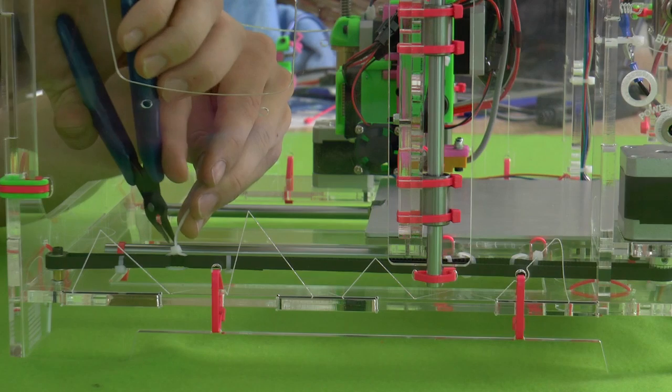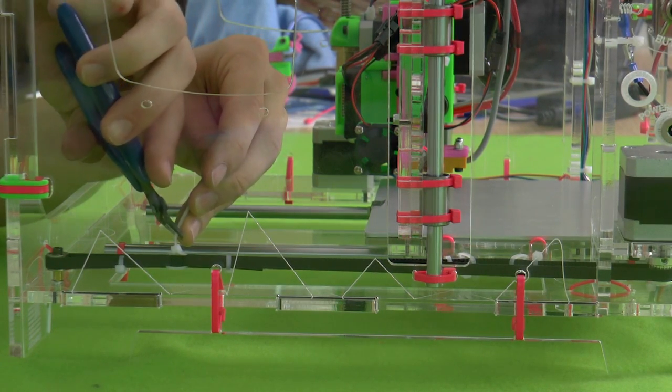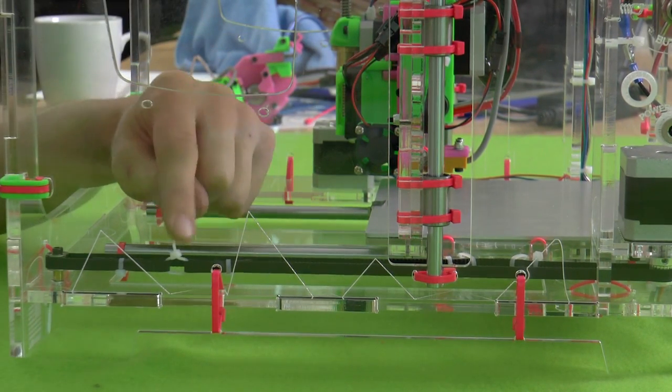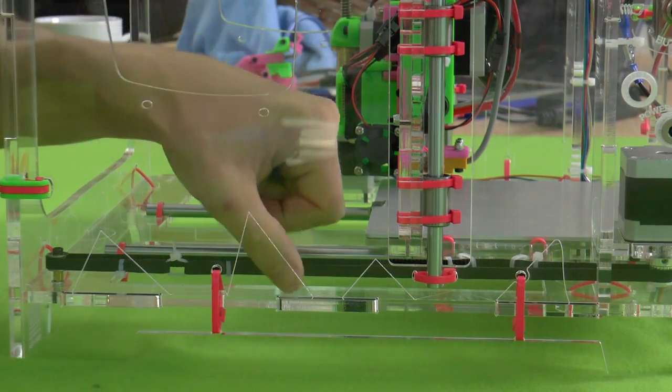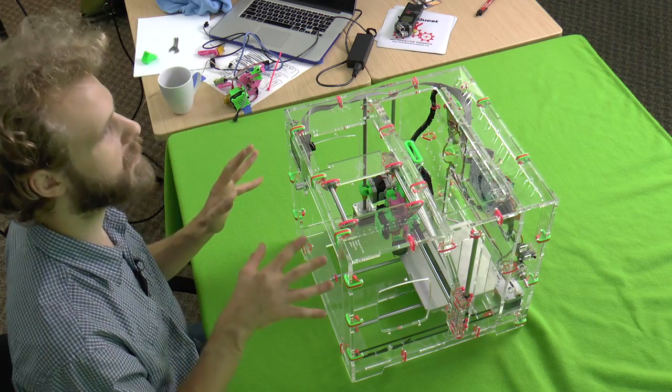I'm going to cut the zip tie shorter, but not completely so I can always grab it with my vise grip and make it tighter if I need to later. Nice. Let's move on to the X belt.